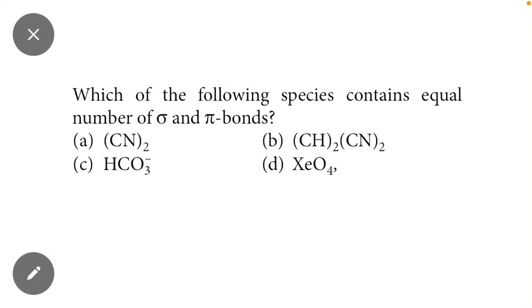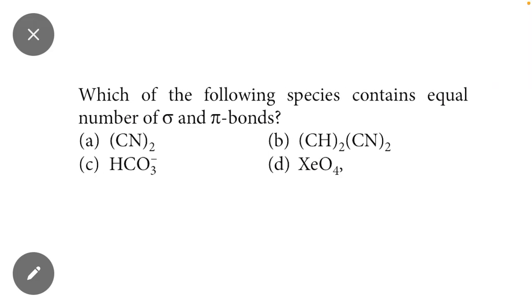Welcome students, in this video we will study the most important questions of chemistry. The question is which of the following species contain equal number of sigma bond as well as pi bond. Here you can see that there are four molecules given and we have to identify which compound contains equal number of sigma and pi bonds.